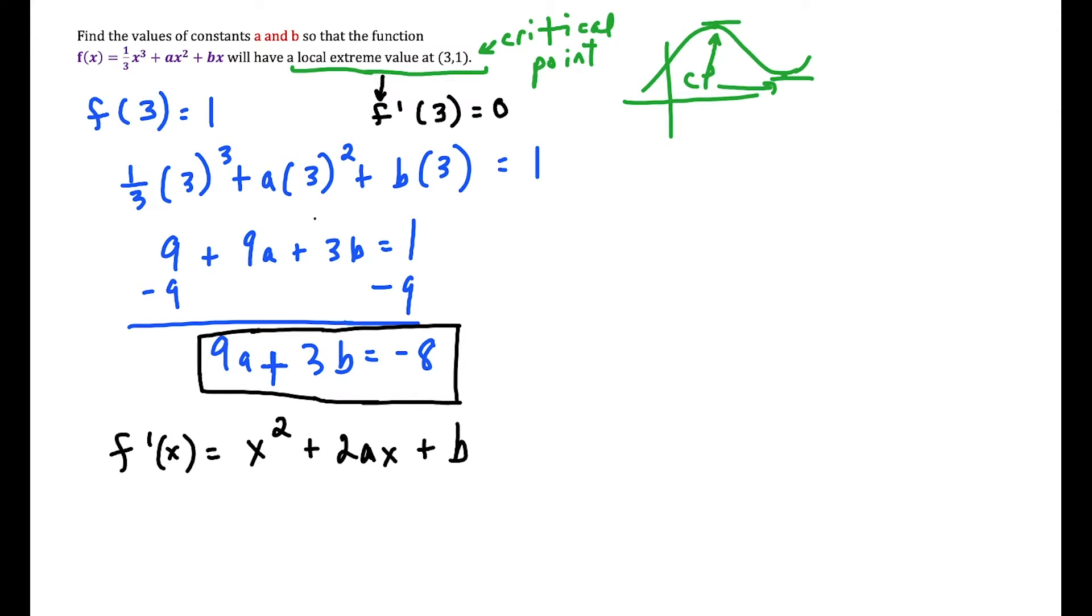And then once again, if we have a local extreme value at (3,1), that tells us the first derivative at 3 equals 0.